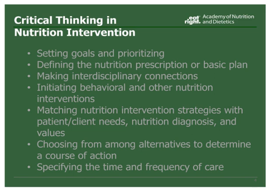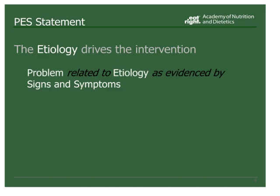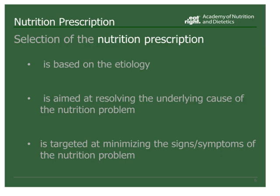In a previous module discussing the PES statement, we talked about how the etiology drives the intervention. When developing the PES statement, the RDN will choose the nutrition diagnosis that the nutrition and dietetics professional can most likely help the patient to resolve. If the etiology, or the root cause, is correct, then this information will directly correspond to the intervention. Selection of the nutrition prescription is based on the etiology portion of the PES statement and is aimed at resolving the underlying cause of the nutrition problem.